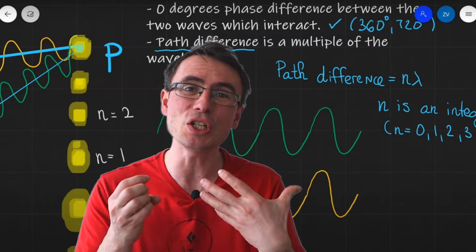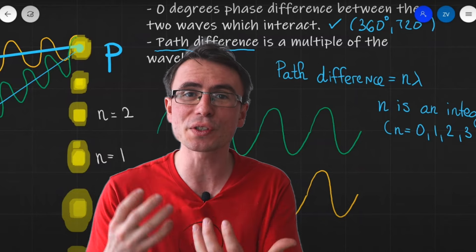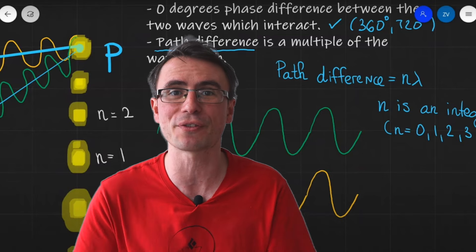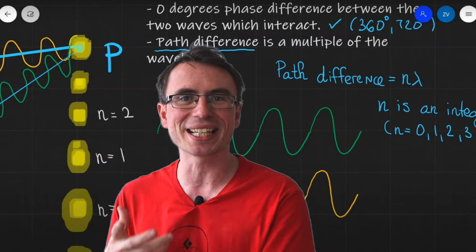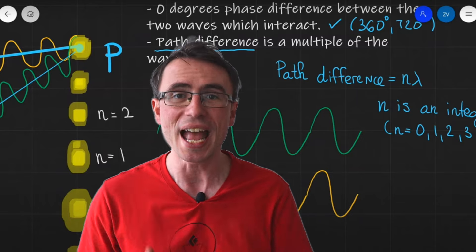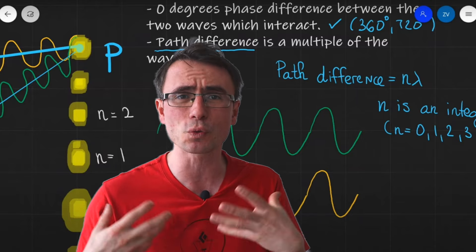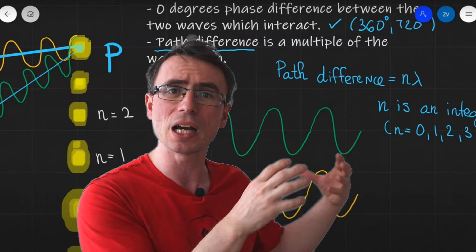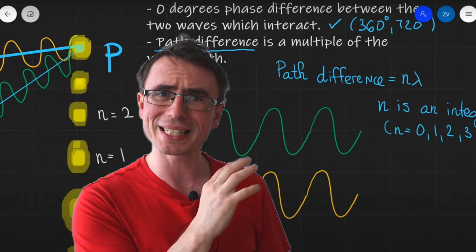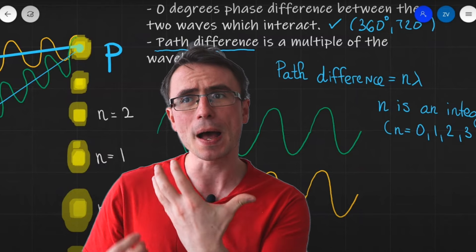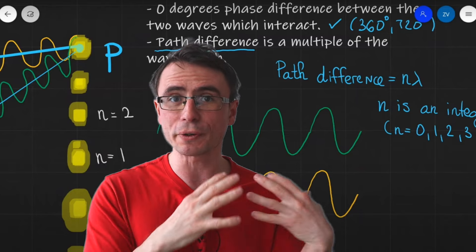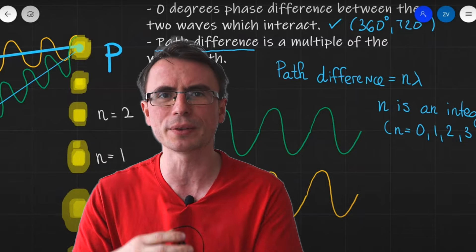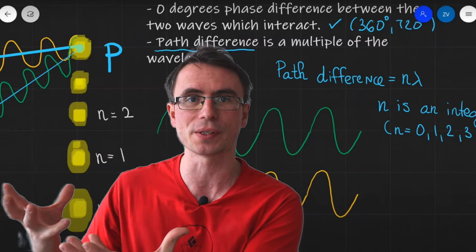Number two, simply not knowing a fact. For instance, not recalling the path difference required for constructive interference and then potentially leaving a guess in an exam situation. If that's the case, the fix is relatively simple and that will be to go over that particular topic. Please note that if you can't recall this particular fact, you're likely not being able to recall other facts around it, so make sure to do a full revision around the topic of path difference, for instance.